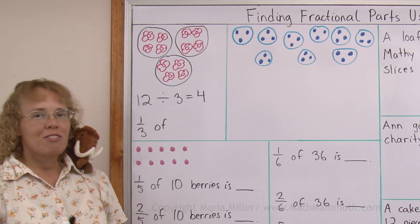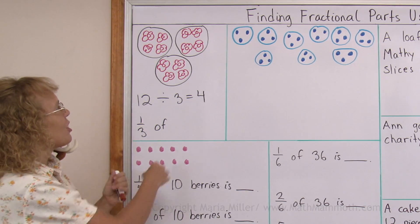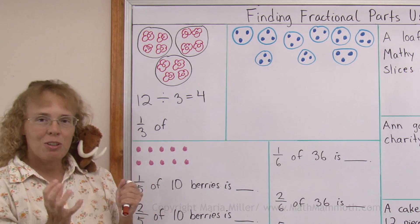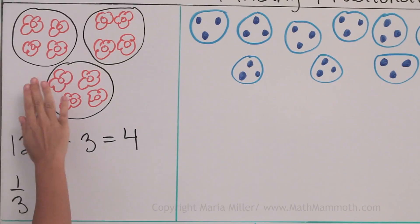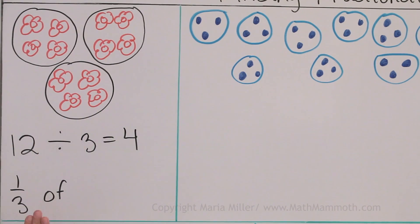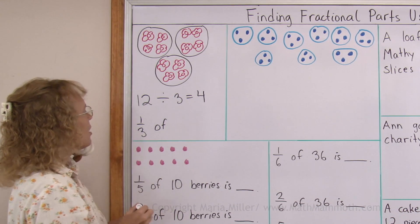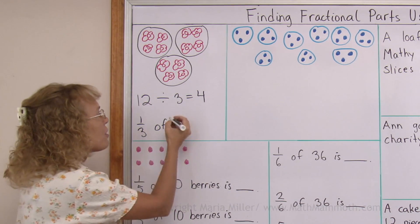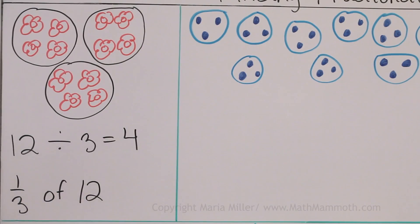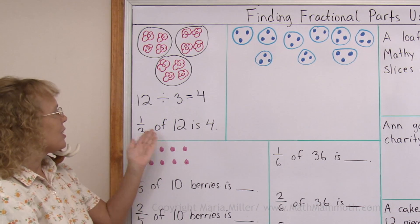But I can use a fraction too. I can think of one third part of all flowers, because we have three groups or three parts. I have divided flowers into three parts, so I can say that one third part of the flowers is four flowers. I'm going to write here: one third of twelve flowers is four flowers. So that's a number sentence using a fraction.